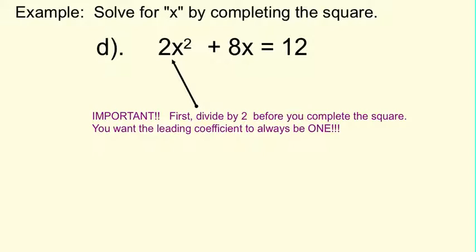This last question we haven't seen yet in the completing the square problem. All the problems we've seen so far, the leading coefficient was a 1. This one has a 2. You always want this leading coefficient to be a 1 to complete the square. So how you get rid of that 2 is to divide the entire equation by 2.